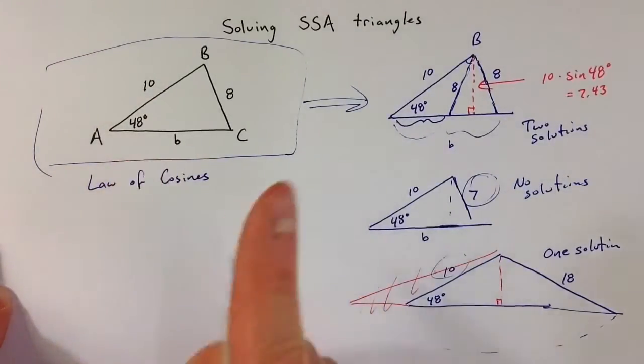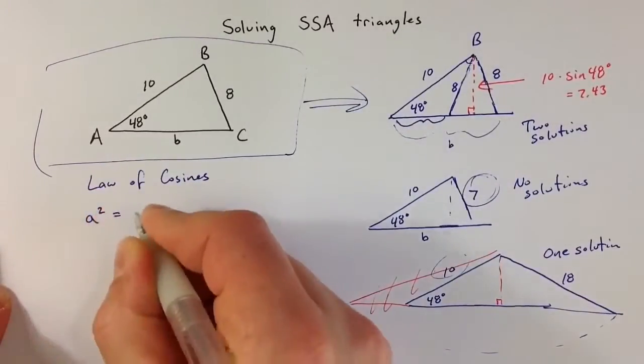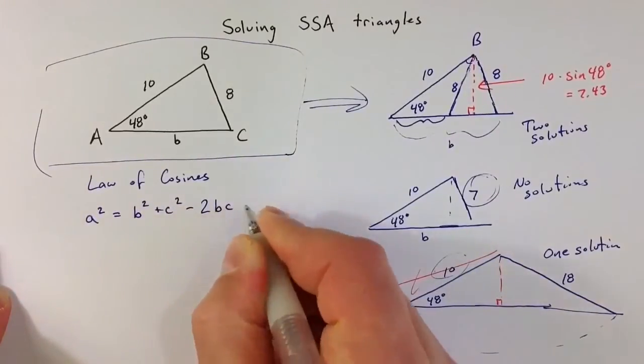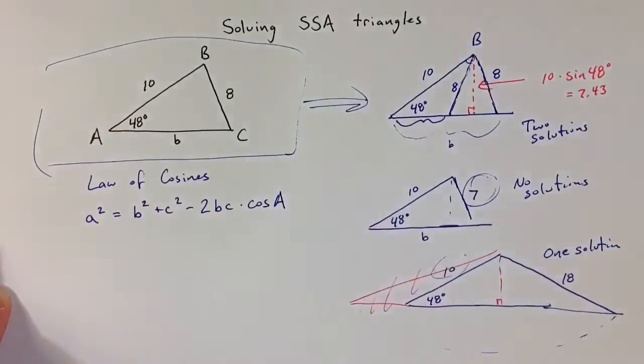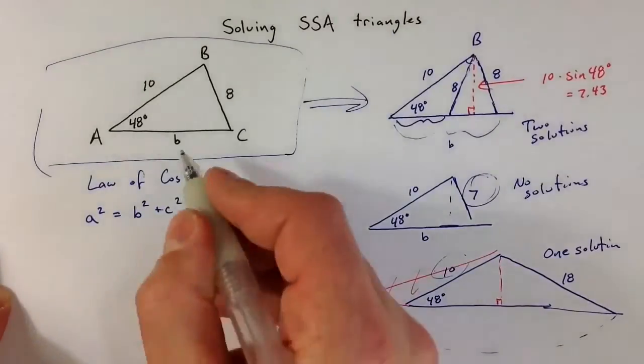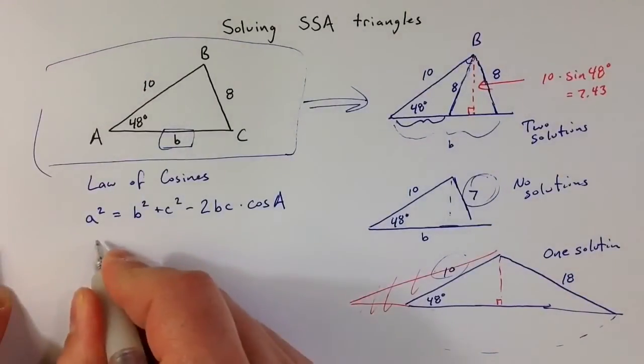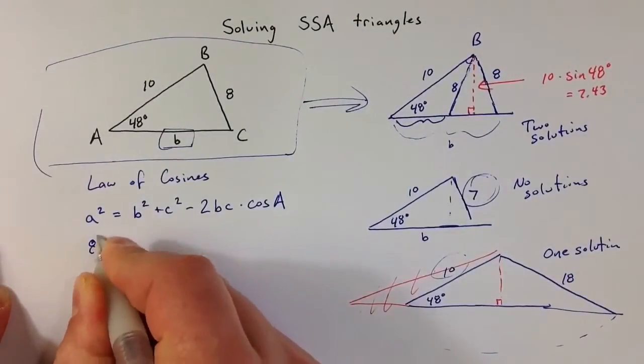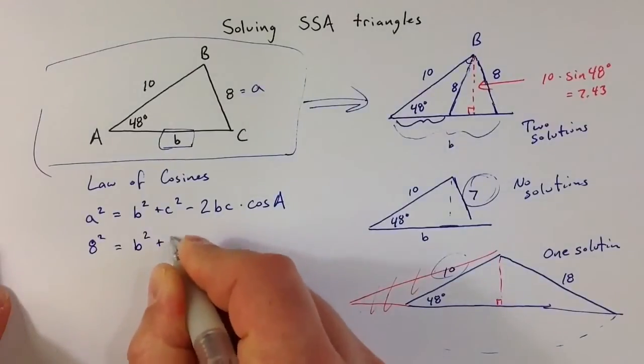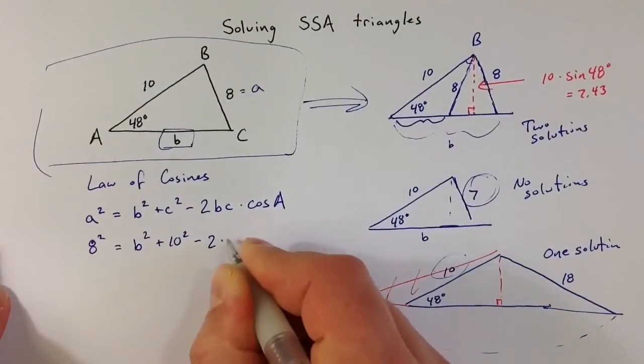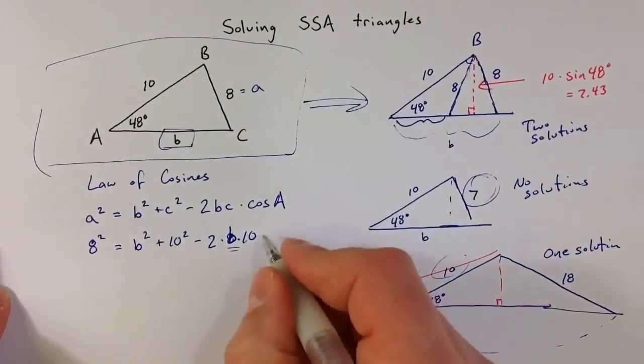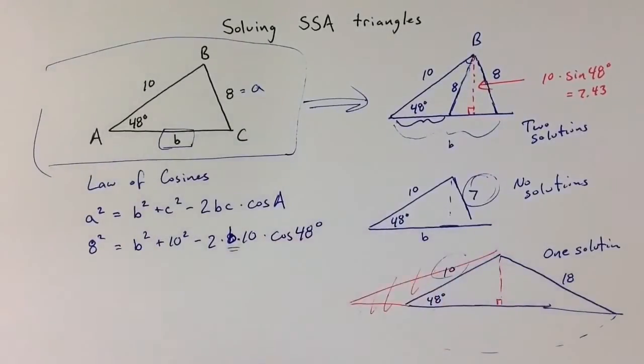So since we're given angle A, I'm going to write it in terms of angle A. The law of cosines says a² = b² + c² - 2bc·cos(A). And because we're given one angle and two of the three sides, we know everything in that formula except for b. So I get 8² because 8 is opposite the given angle, so that's side a, equals b² (unknown) plus 10² minus 2·b·10 times cos(48°).